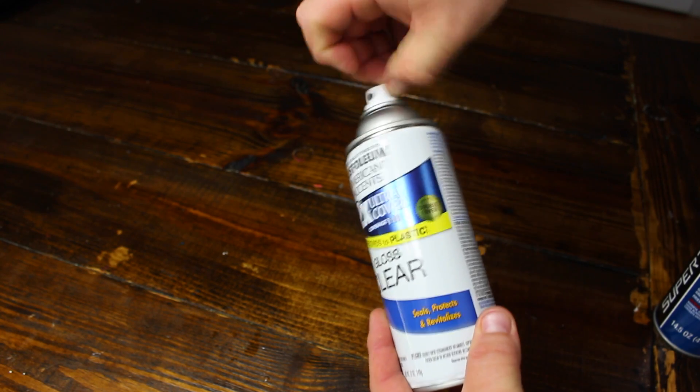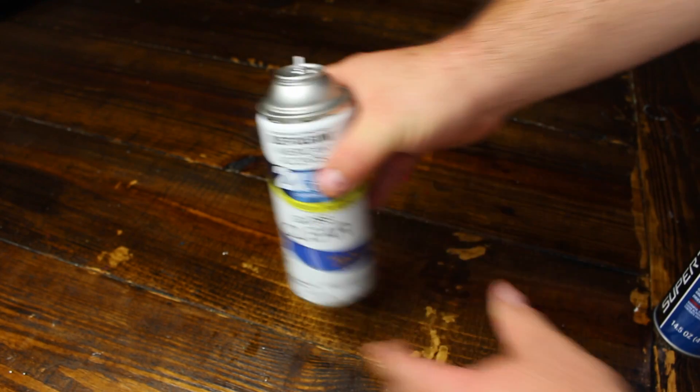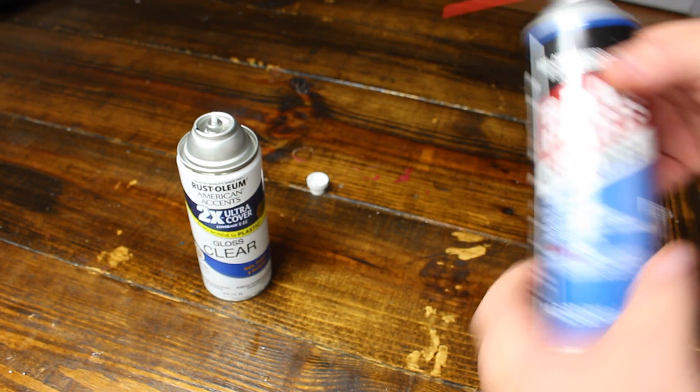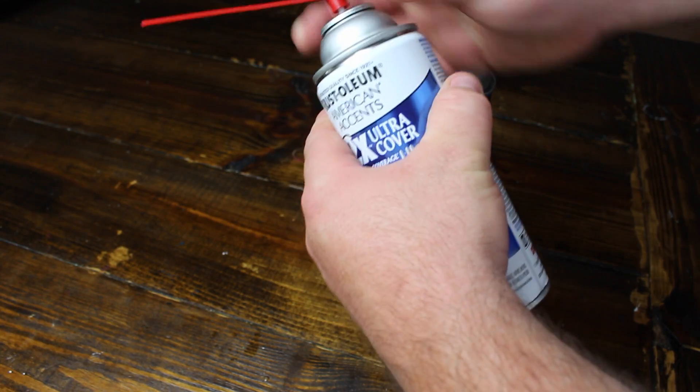So the first step of mixing the gloss clear, we had to get the paint out of the can. I removed the factory nozzle from the gloss clear and replaced it with the nozzle from this carb spray cleaner. A WD-40 with a straw would work as well.